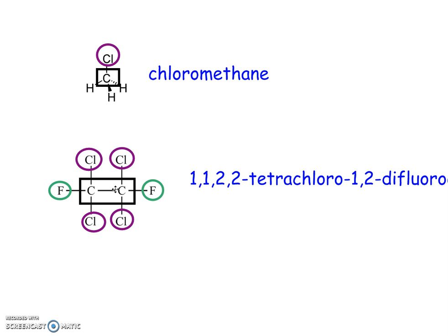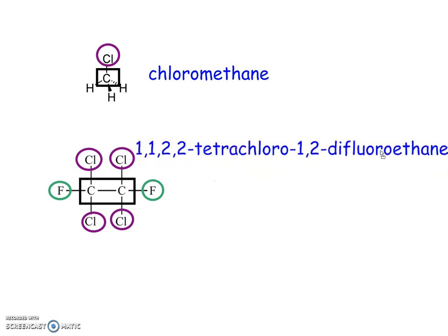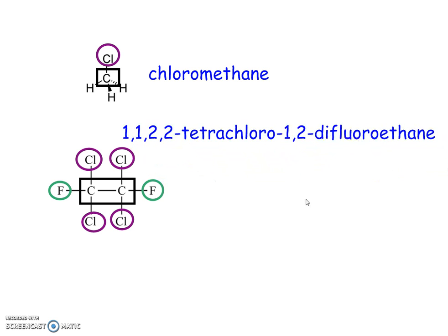And then 2 carbons in the longest chain is eth, and all single bonded, so ane. So this one is 1,1,2,2-tetrachloro-1,2-difluoroethane.